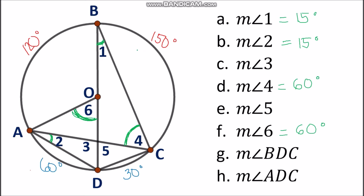Using arc BC, we find the angle that intercepts it, which is angle BDC. Angle BDC intercepts arc BC and we can apply the inscribed angle theorem. Since arc BC is 150 degrees, angle BDC is half of that, which is 75 degrees.